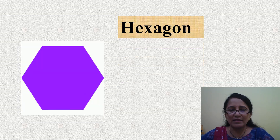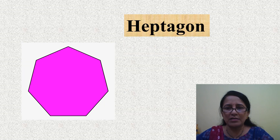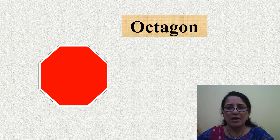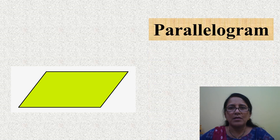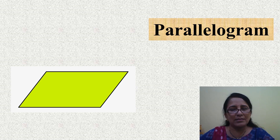This is hexagon. It's not hexagon — it's hexagon. This is heptagon, heptagon. Octagon, octagon. Now this is rhombus, rhombus. Parallelogram — observe the word parallel and gram together. Parallelogram.